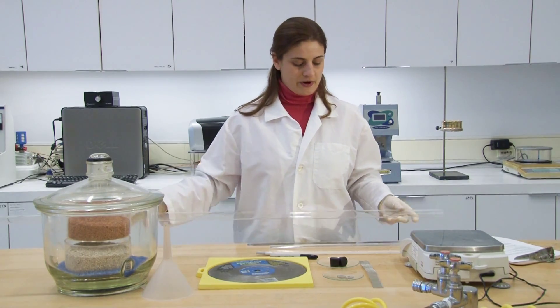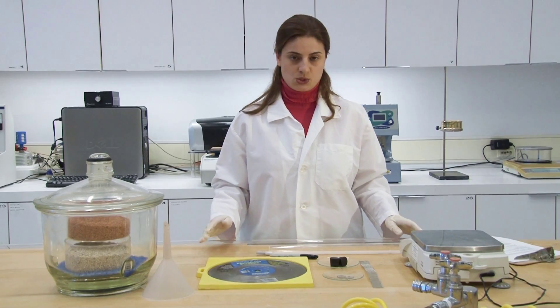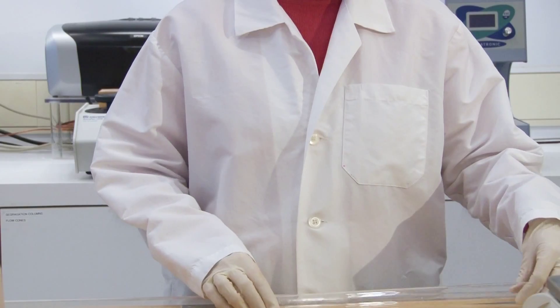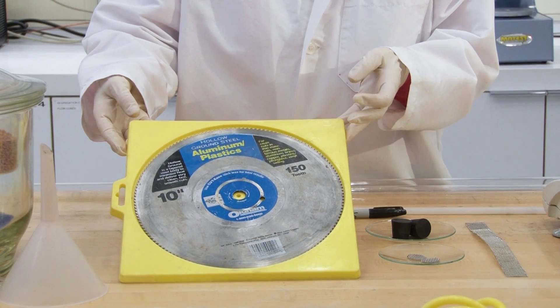In order to prepare our columns, we need to cut this tube into smaller tubes. So we will use a tile saw with a plastic cutting blade.